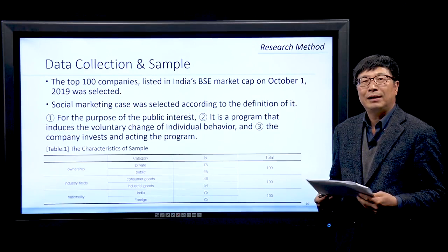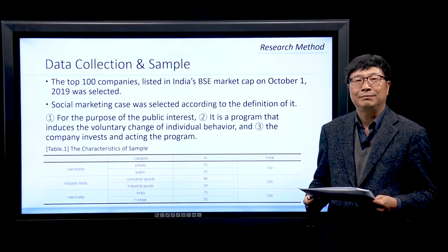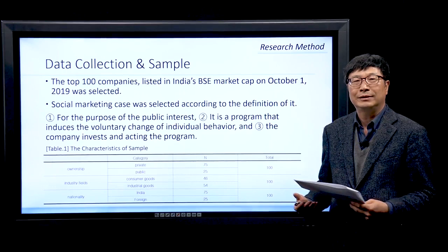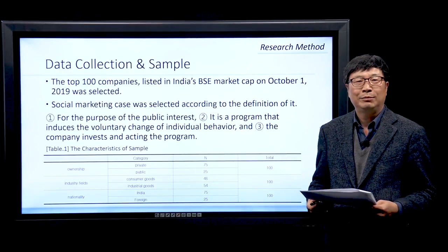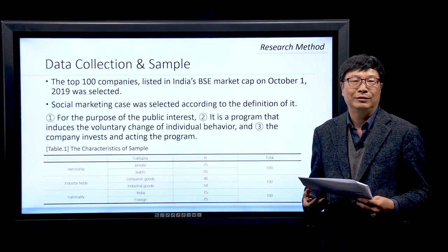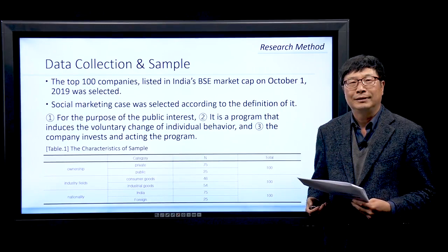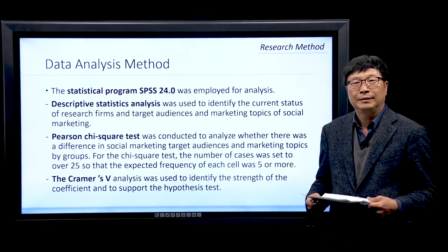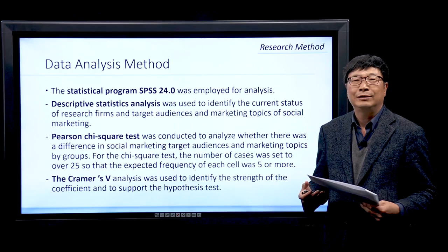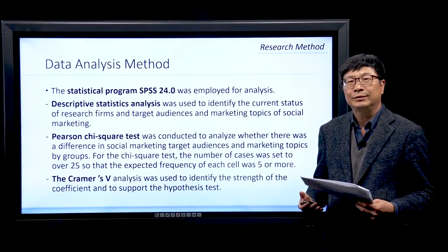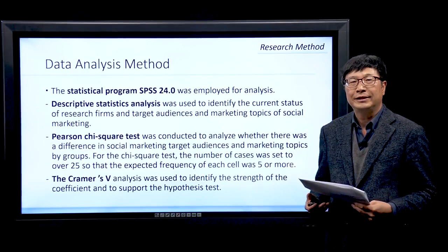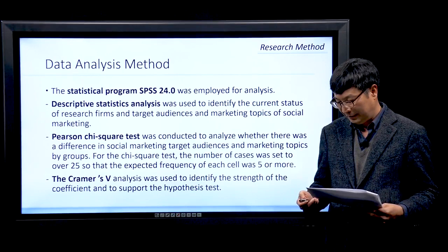We collected data from the top 100 companies in India, listed in India's BSE market cap. Social marketing cases were selected according to defined criteria. As shown in Table 1, data were organized into three sections, each with two categories. We gathered data from the 100 companies and analyzed it using SPSS. Descriptive statistics analysis was conducted, along with a Pearson Chi-square test, and we calculated Cramér's V.